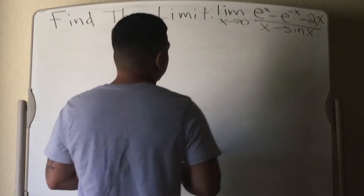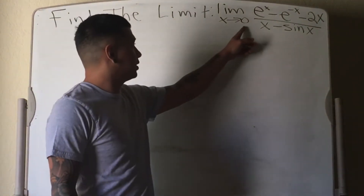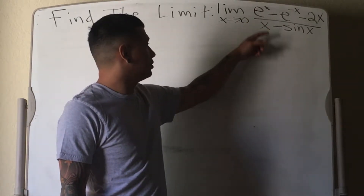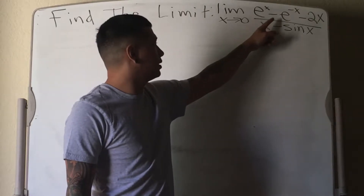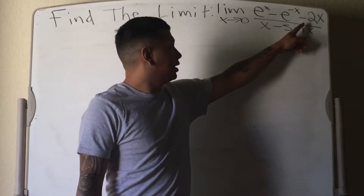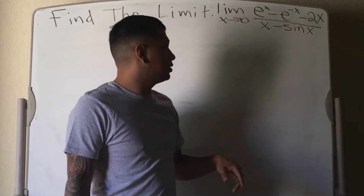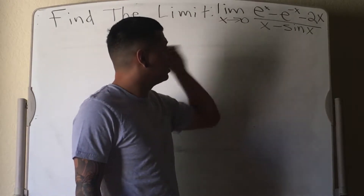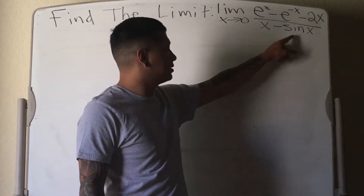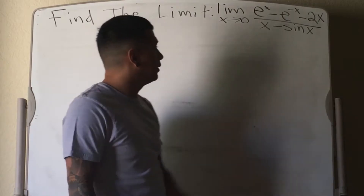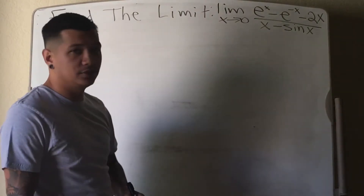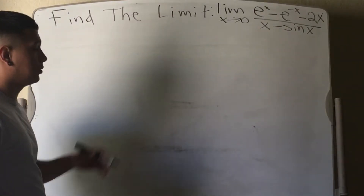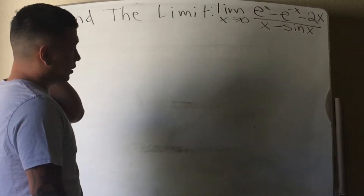The first thing you want to do is just plug in 0. When you plug in 0, anything to the 0 power is just 1. So this will be 1 minus 1, which is 0, minus 2 times 0, which is 0. So the top will be 0. And the bottom will be 0 minus sine of 0, which is just 0. So it's going to be 0 over 0, and we're going to have to apply L'Hôpital's Rule from the get-go.